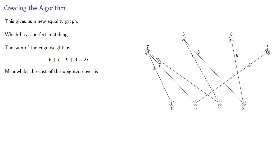And meanwhile, the cost of the weighted cover is 27. And since the sum of the edge weights is the cost of the weighted cover, the matching is maximal. We knew that anyway because it was a perfect match, but it's good to verify it.